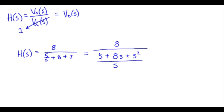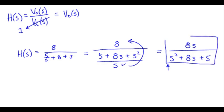We have 8 up on top. Moving this S around up here, we have 8S divided by S squared plus 8S plus 5. So, we have unit coefficient on the highest order polynomial. There's our answer.